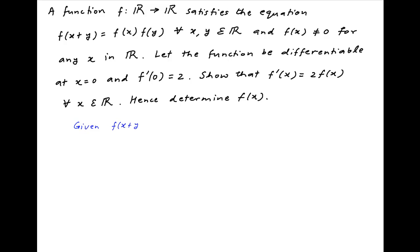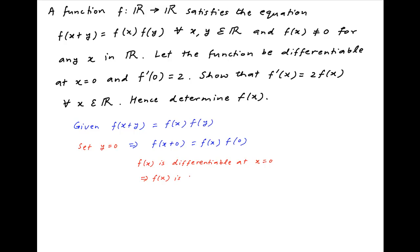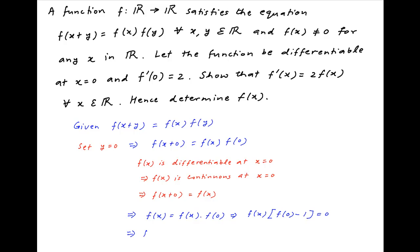We are given that f(x+y) = f(x)·f(y). Setting y=0, we get f(x+0) = f(x)·f(0). Since f(x) is differentiable at x=0, it is also continuous there, so f(x+0) = f(x). The equation becomes f(x) = f(x)·f(0). Moving all terms to the left and factoring out f(x), we get f(x)·[f(0) − 1] = 0, which implies either f(x) = 0 or f(0) = 1.